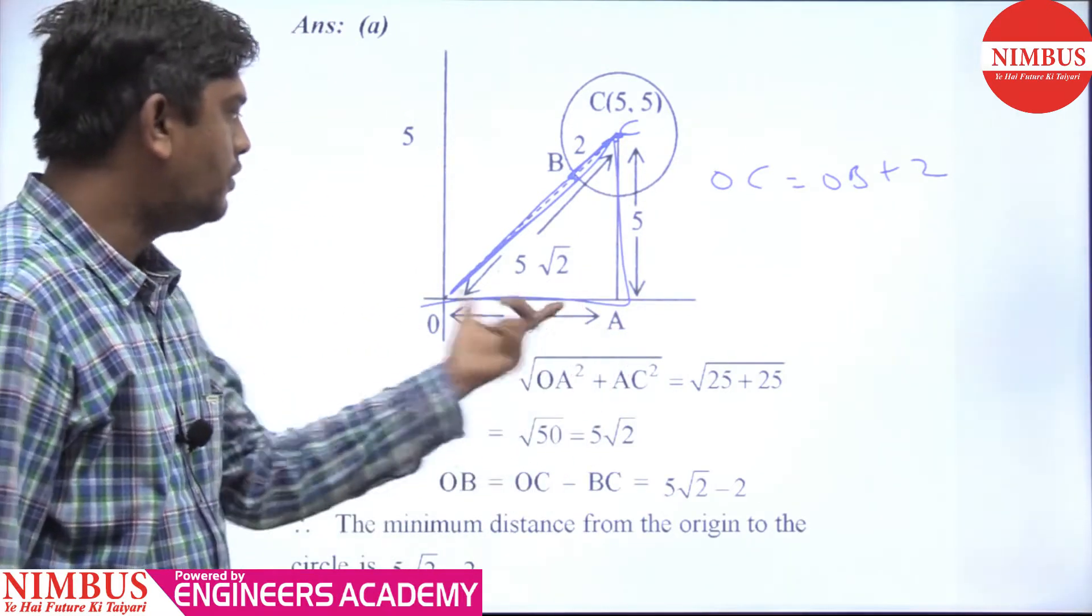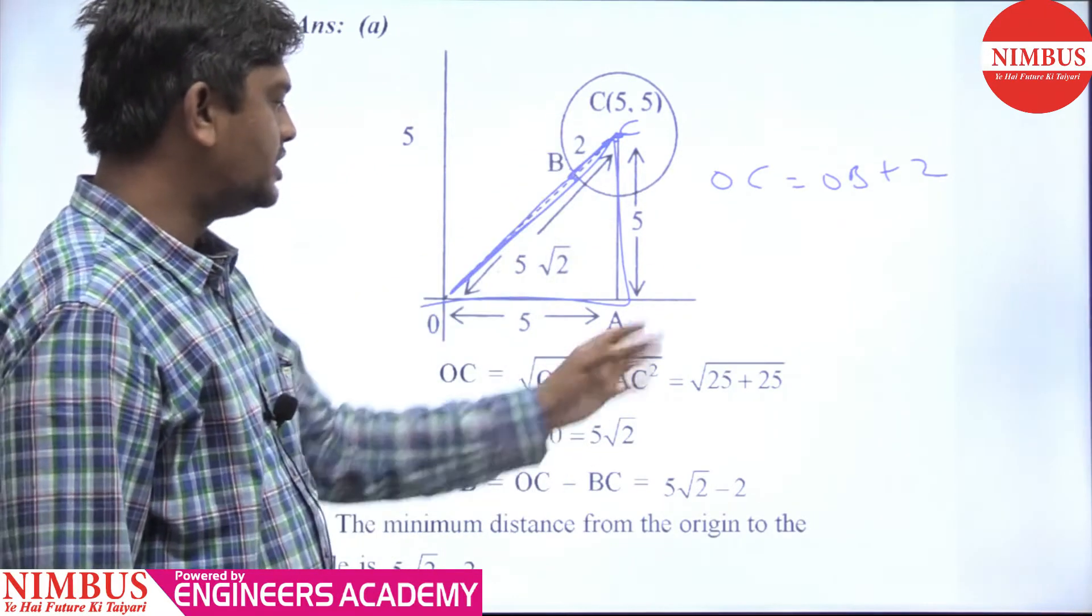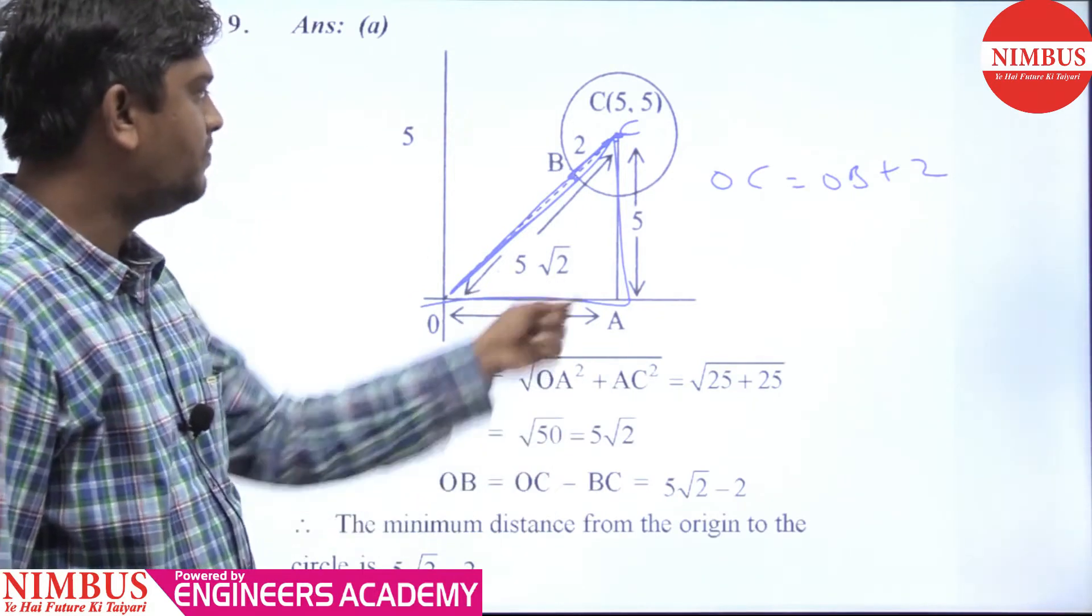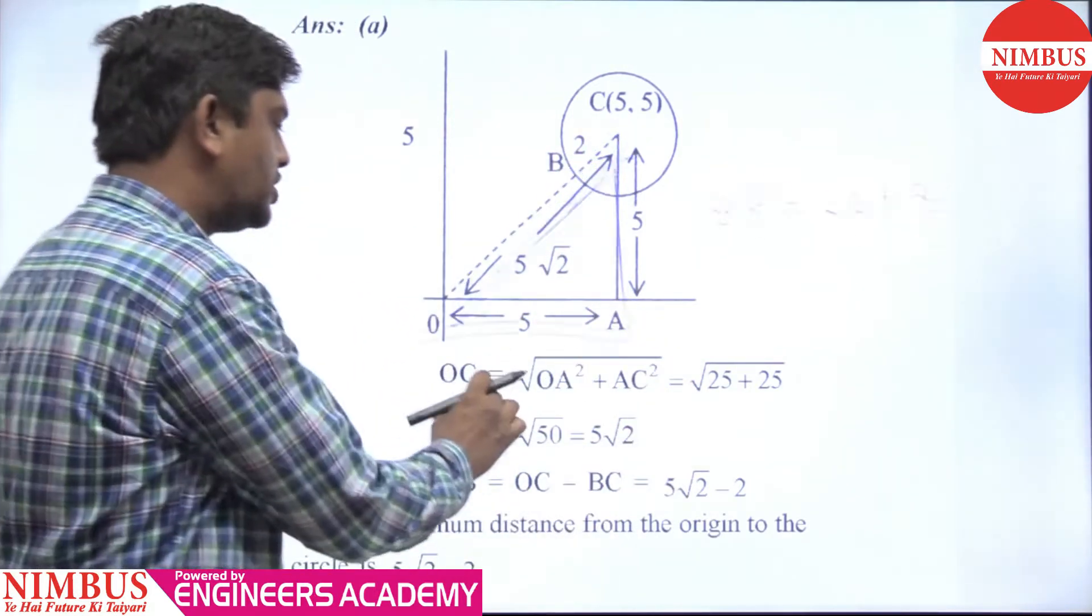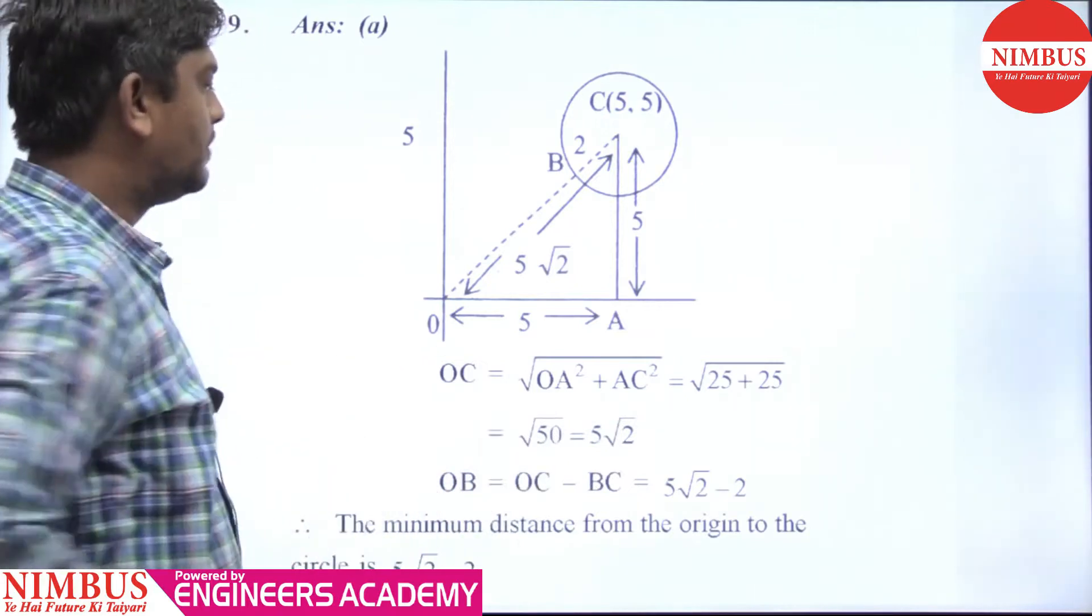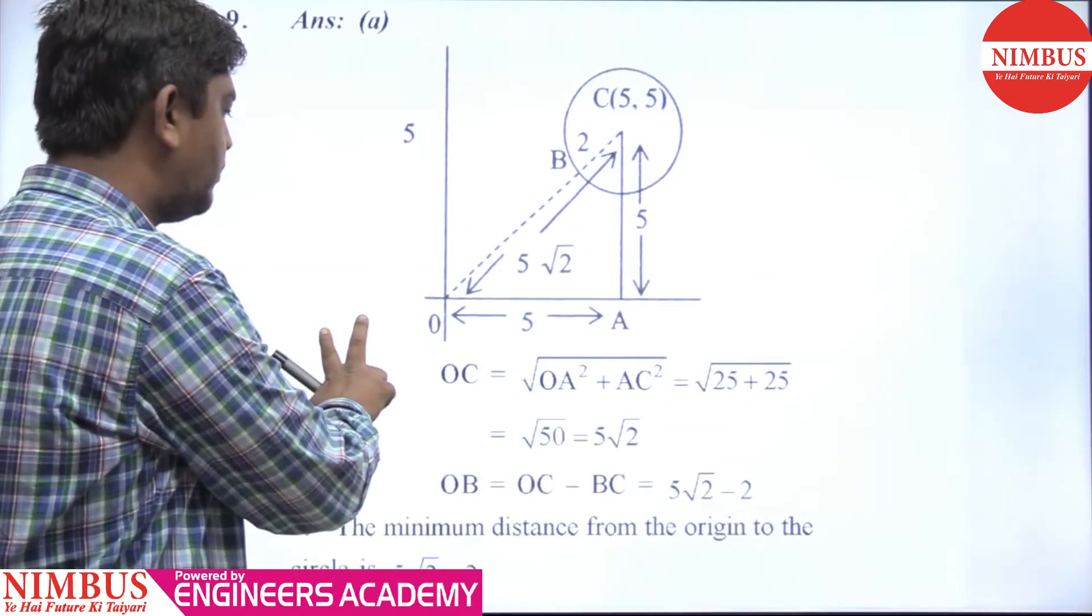This is OC equal to √(OA² + AC²). OA value is 5 and AC value is 5. So OC value is 5√2.